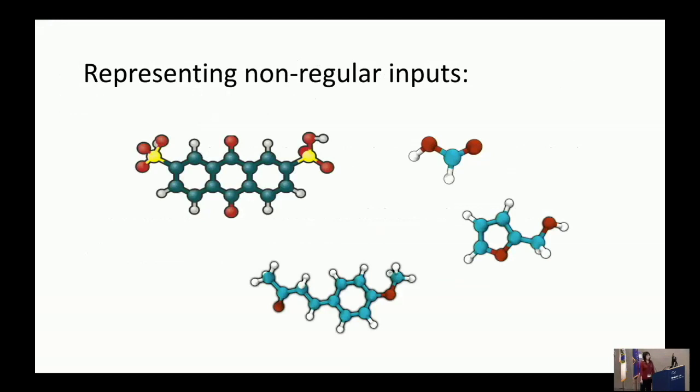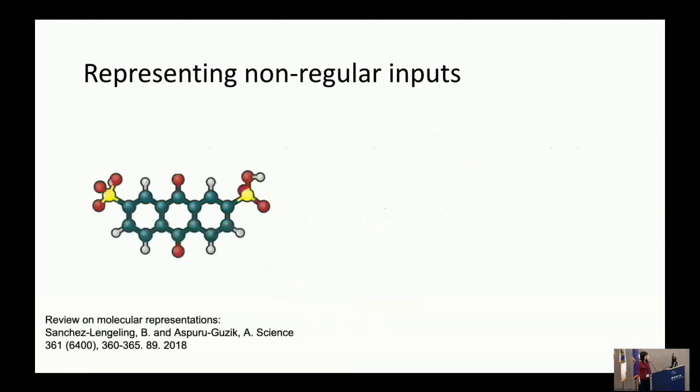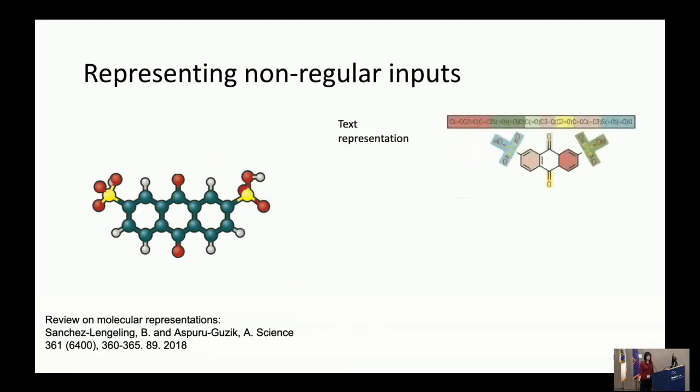So representing non-regular inputs: molecules can vary in the number of atoms they have and the number of bonds they have, and this makes for a rather complicated representation problem compared to images where you can always have the same number of pixels. For 40 or 50 years now, the drug discovery community has already thought of some solutions to this problem. One solution is to express this graph as a text string. You see here that different fragments of the molecule correspond to different parts of the text string, and the opening and closing of these rings are also represented by numbers. So it's a very grammar-focused text-based representation that you can use to represent molecules.